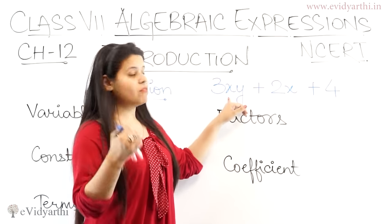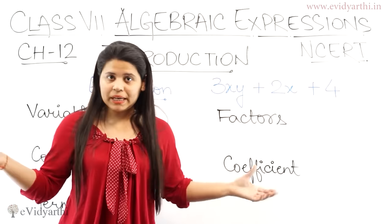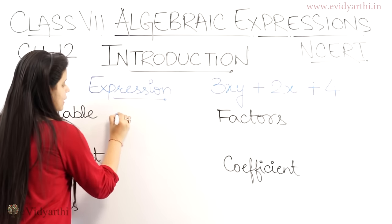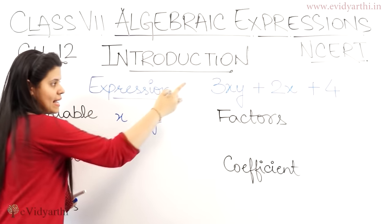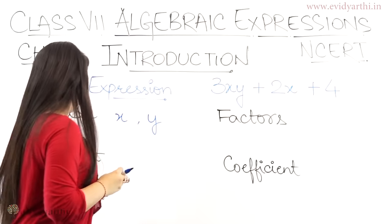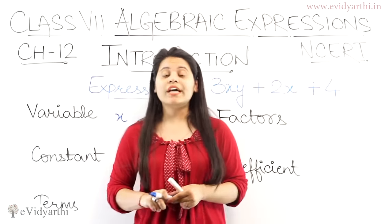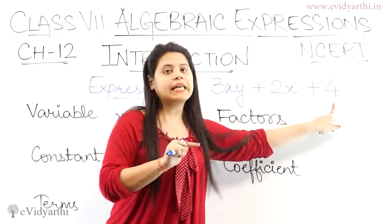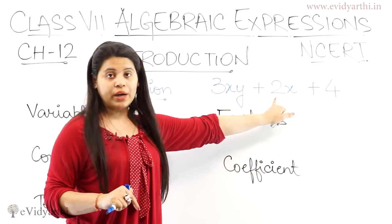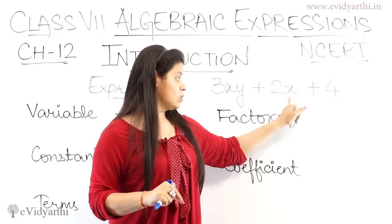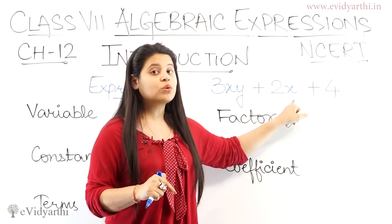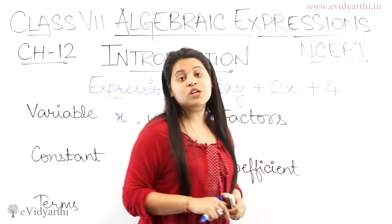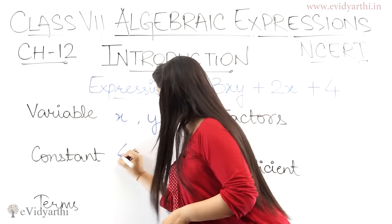Variables ki value kabhi bhi change ho sakti hai. X kabhi 1 ho sakti hai, 2 ho sakti hai, 3 ho sakti hai, koi bhi number ho sakti hai. Similarly, y bhi koi bhi number ho sakti hai. So here the variables are x and y. Then we have constant. Constant woh hota hai jo change nahi ho sakti. Jaise ki yahan pe 4 hai — ye constant hai, iske value 4 hi rahegi. For example, 2x mein agar x equals 1 to 2 into 1 equals 2; agar x equals 2 to 2 into 2 equals 4 — matlab iske value change ho jaegi. But the number 4 as it is remains. So the constant here is 4.